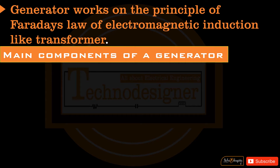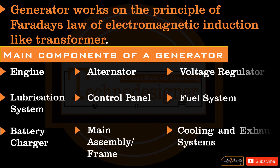Main components of a generator: engine, alternator, voltage regulator, lubrication system, control panel, fuel system, battery charger, main assembly/frame, and cooling and exhaust systems.